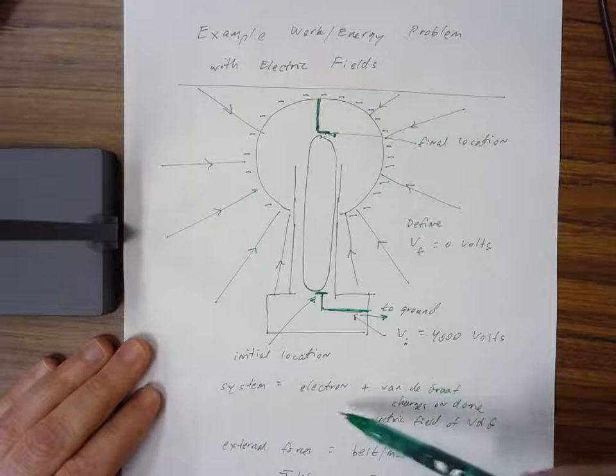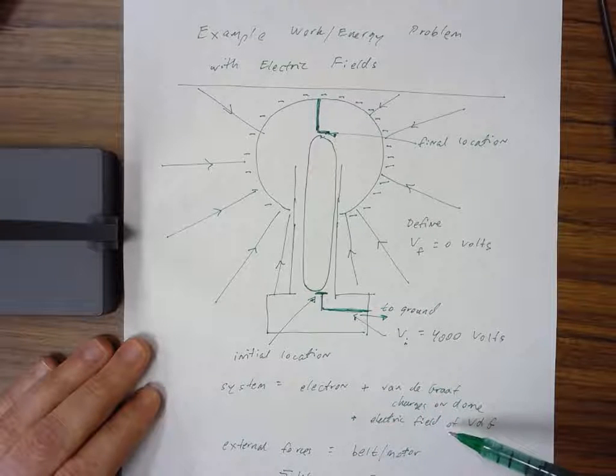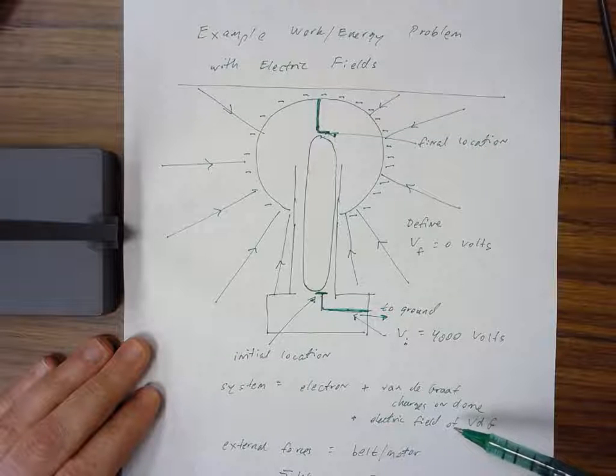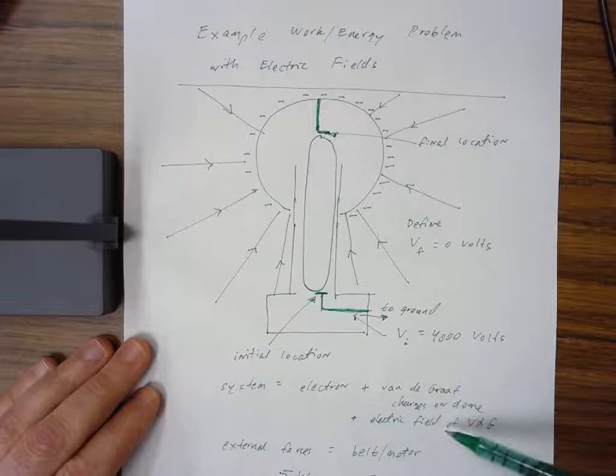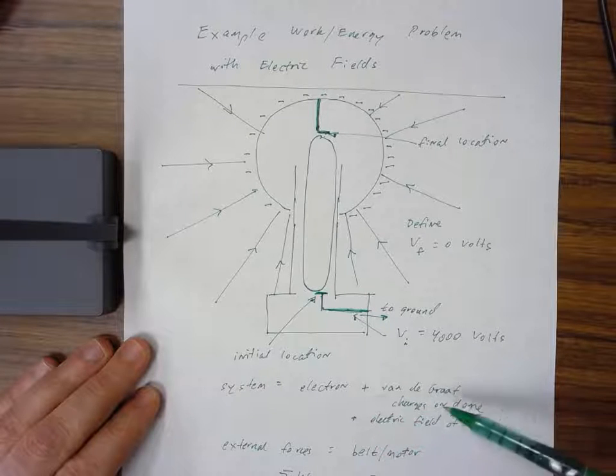The reason we do that is so we can say that our system—object plus earth in the case of a mechanics problem—has what we've called gravitational potential energy.